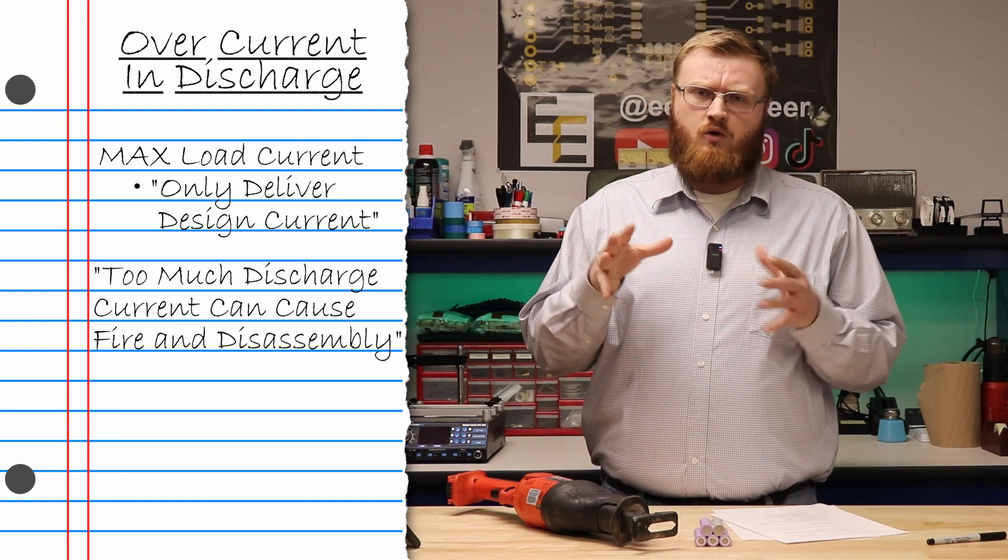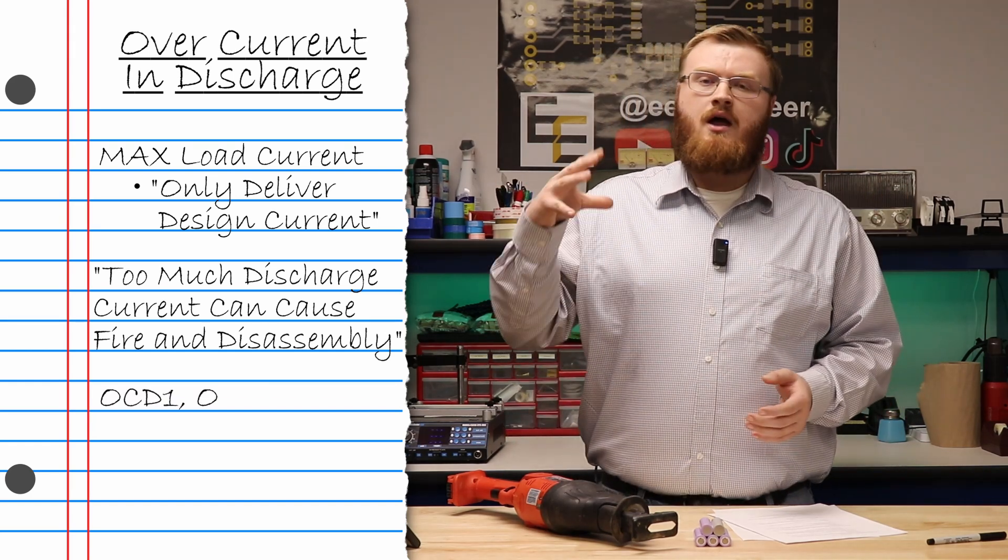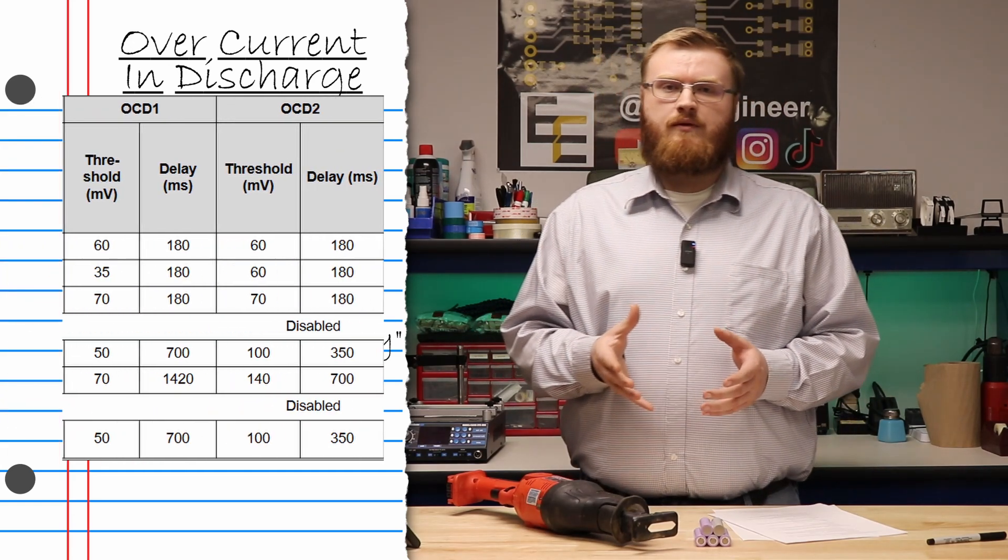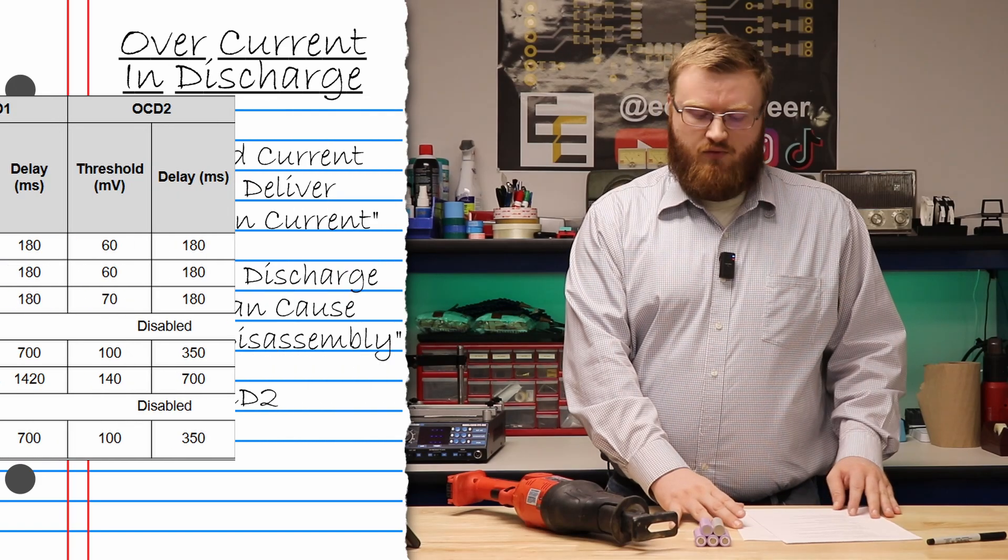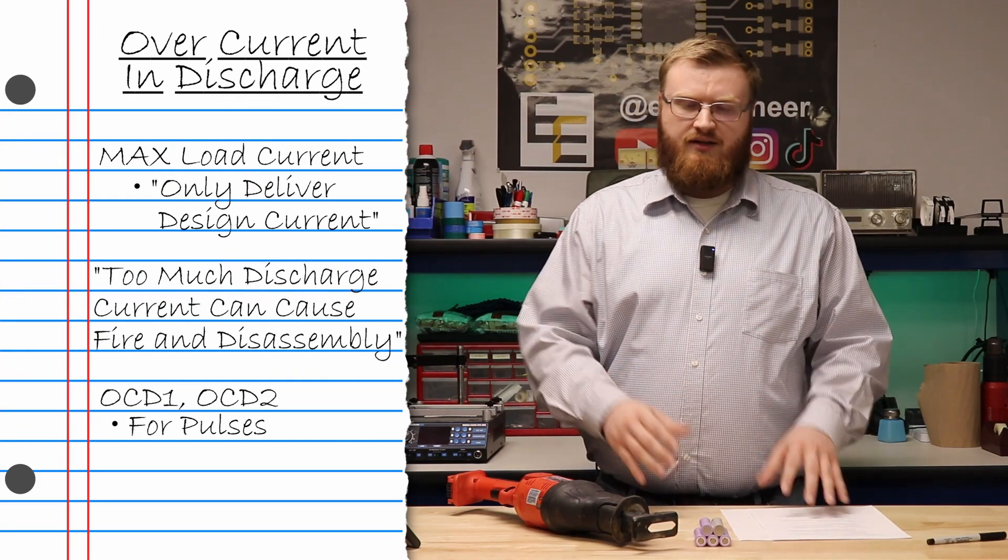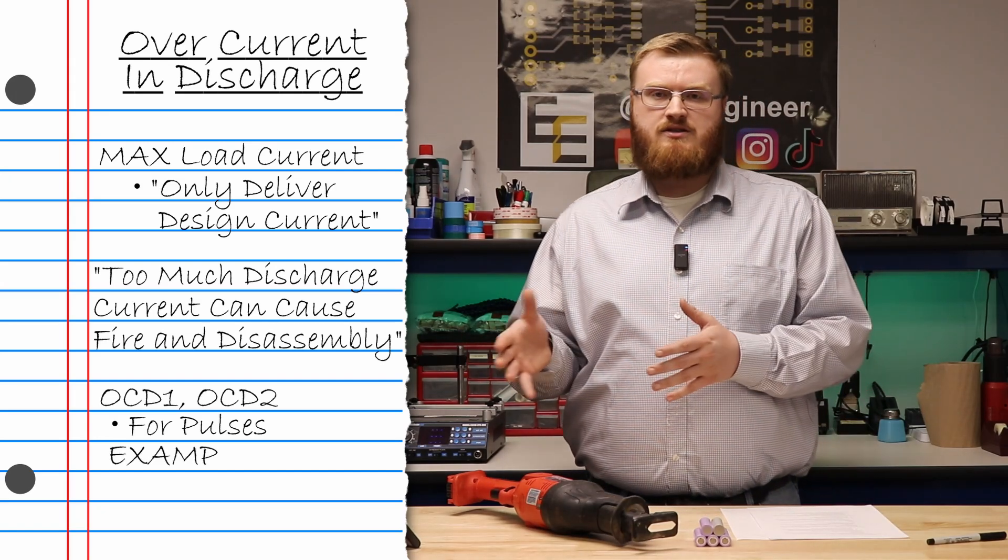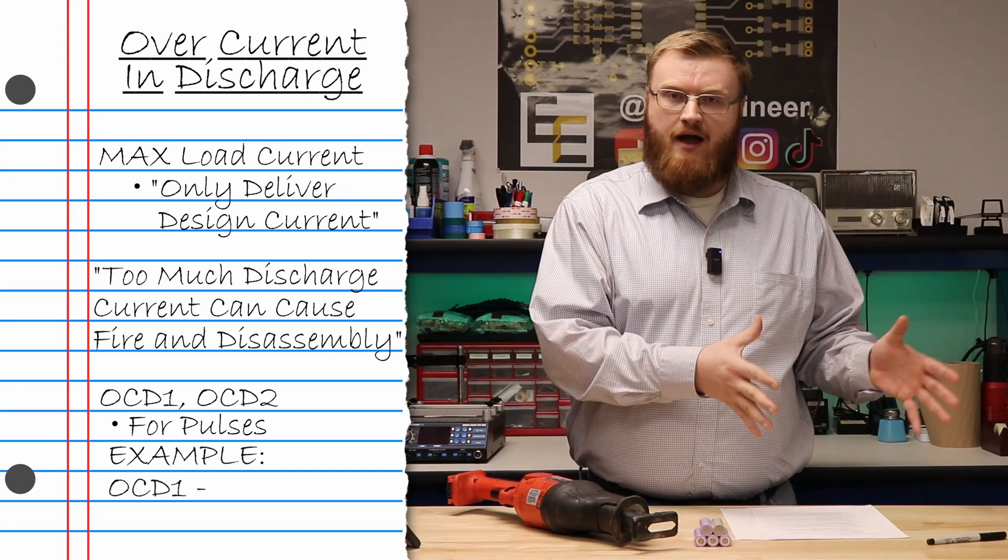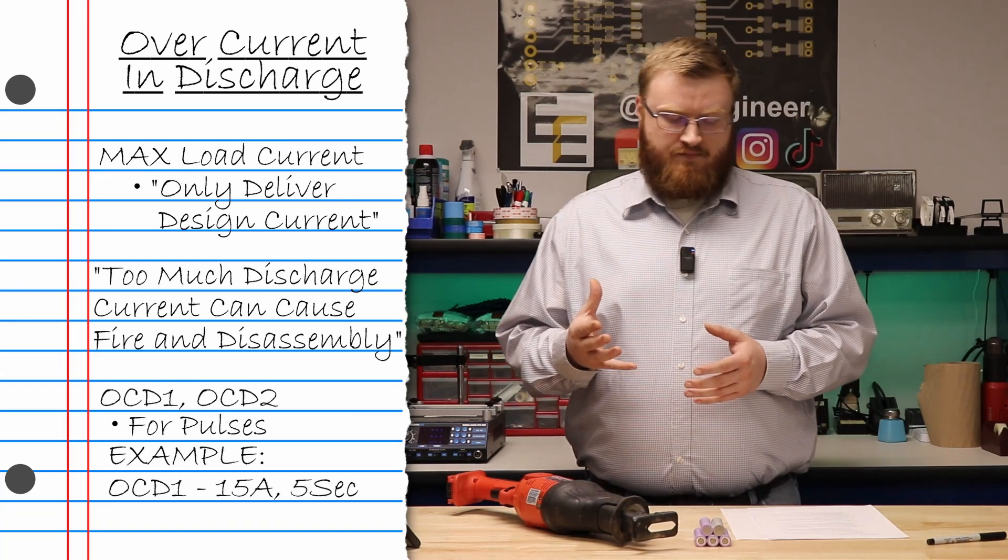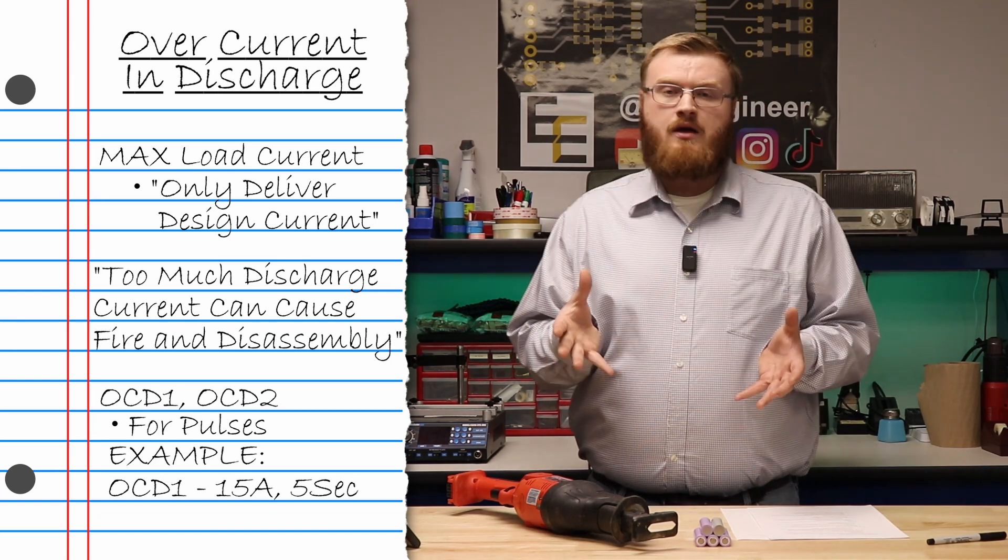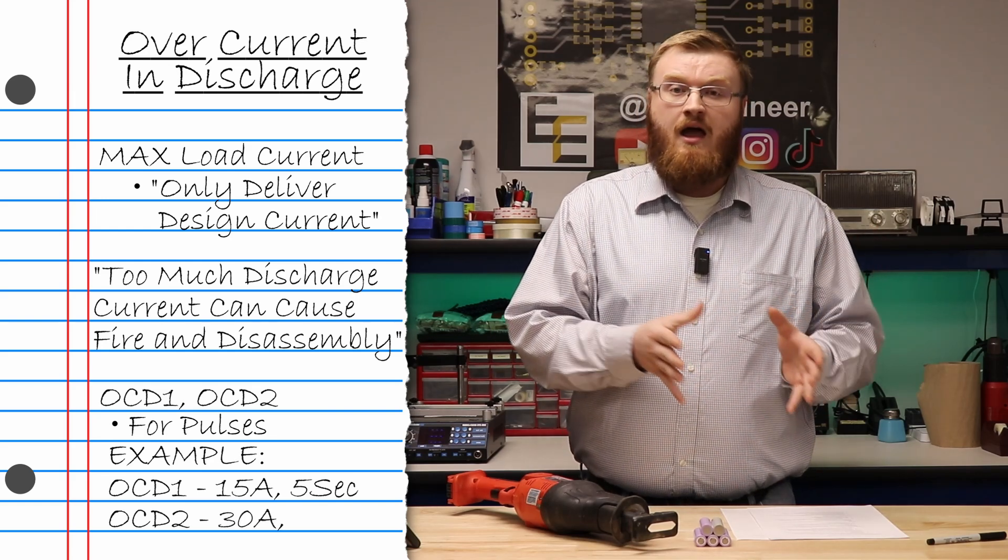Sometimes your BMS has two different settings: overcurrent discharge one and overcurrent discharge two. If we look at the datasheet for the 77915, we see OCD1 and OCD2. The reason you would do this is if you have pulses. Let's say you set your OCD1 trip point to 15 amps at five seconds. If there is 15 amps being drawn for more than five seconds, the output will cut off. However, you need to have a 30 amp pulse for one and a half seconds.